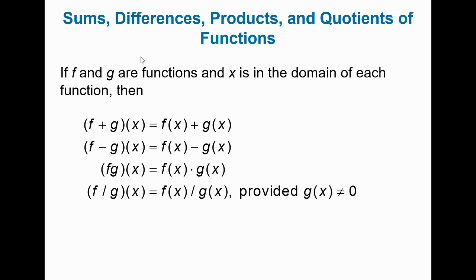Sums, differences, products, and quotients. If f and g are functions and x is in the domain of each, then f plus g of x is f of x plus g of x. f minus g of x is f of x minus g of x. fg of x implies multiplication, taking the f of x function, multiplying it times the g of x function. f divided by g of x is f of x divided by g of x, provided that g of x, of course, does not evaluate to 0 because division by 0 is undefined.